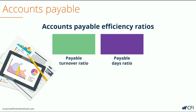Just as with inventory and accounts receivable, there are two ratios for accounts payable efficiency: the payable turnover ratio, which indicates how many times payables turnover in the period, and the payable days ratio, which indicates how many days on average it takes for the company to pay its bills.